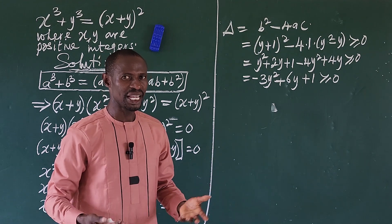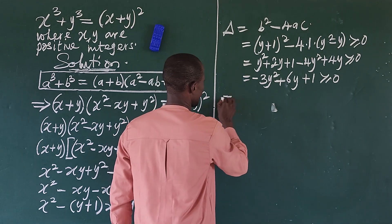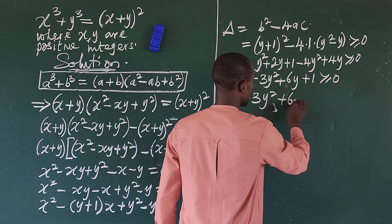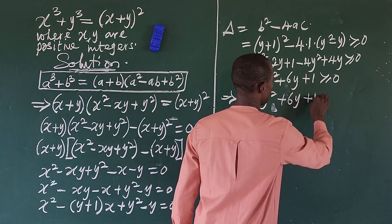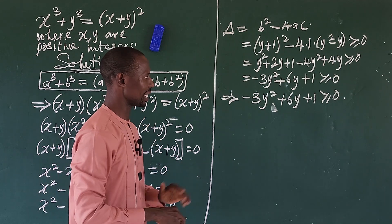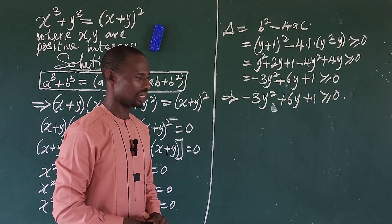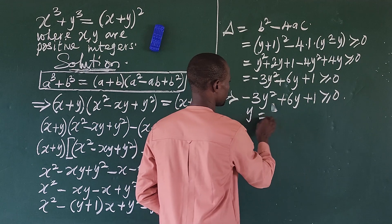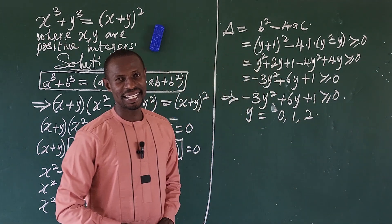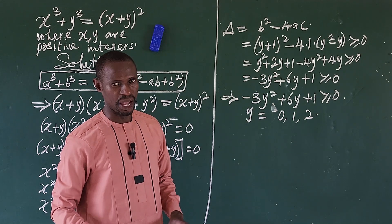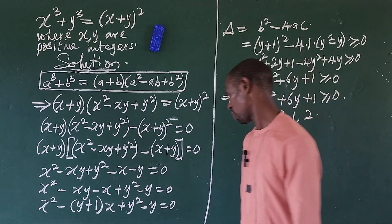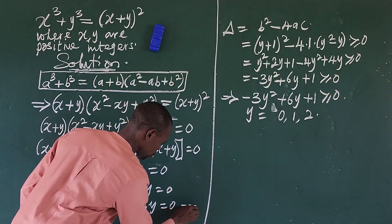Expanding the discriminant: y squared plus 2y plus 1 minus 4y squared plus 4y, which simplifies to minus 3y squared plus 6y plus 1. For the discriminant to be greater than or equal to zero, we solve the inequality minus 3y squared plus 6y plus 1 greater than or equal to 0. The values of y satisfying this inequality are y equals 0, 1, and 2. Now we substitute each of these into our quadratic equation — which we'll call equation star — to find x.